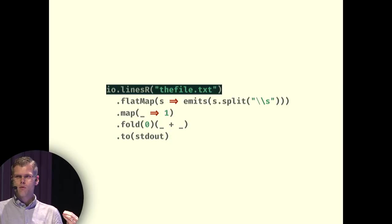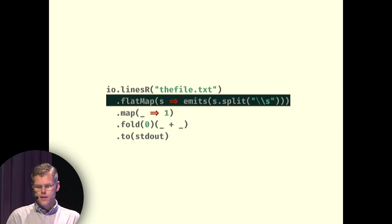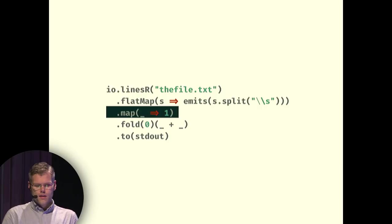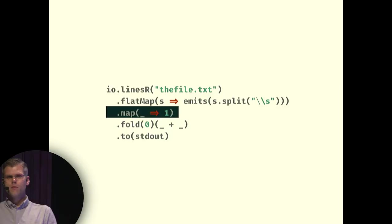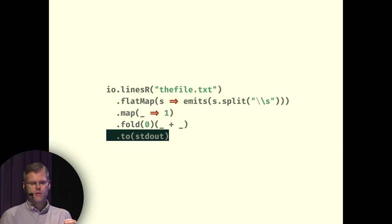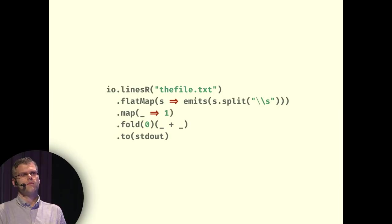The next part takes any stream of strings, splits it on word boundaries, and turns it into a stream of words — it works for any stream of strings. Then this part replaces every element of a stream with the number one. This part sums any stream of numbers and emits the sum. And this last part takes whatever is on the stream and prints it to standard output. The meaning of the whole expression is just a combination of the meanings of the sub-expressions, and the whole thing has the same character as the parts — the parts are streams and the whole thing is also a stream.